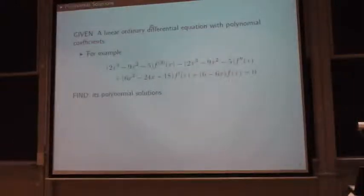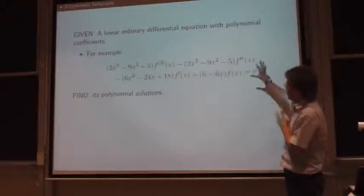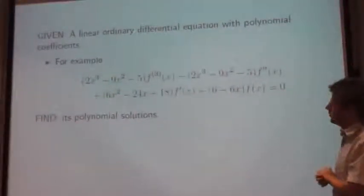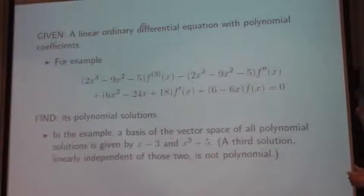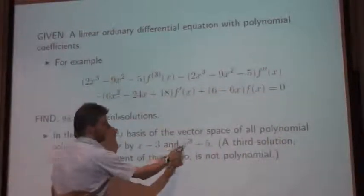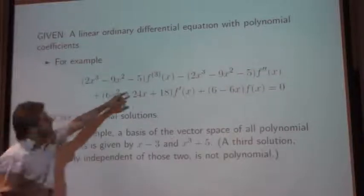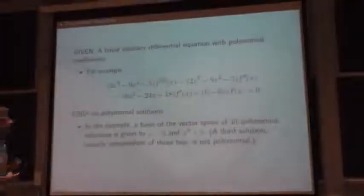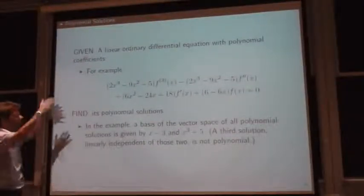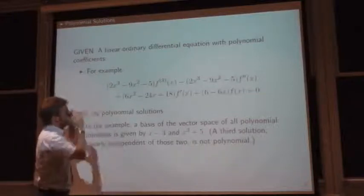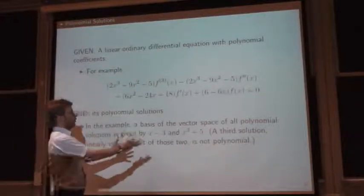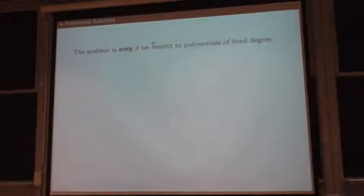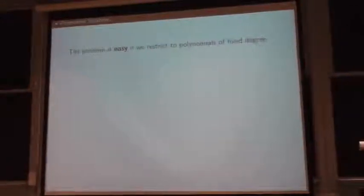So, let's start with polynomials. Again, the problem is this. Given the differential equation, the question is, is there a polynomial which I can plug in for f so that this equation is satisfied? In this example, it would be two polynomials. That one, x minus 3 and x cubed plus 5. And because it's a third order equation, there is a third solution, but that happens to be not a polynomial. So, we want to be, we want the algorithm to find all the polynomials and it cannot just search forever. It has to recognize at some point that it has found all of them and the other thing is not a polynomial. We want to be sure about that.